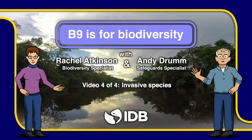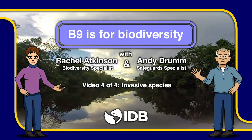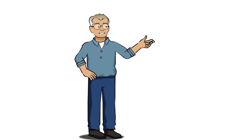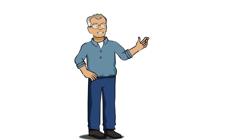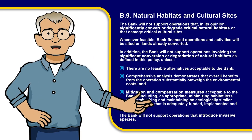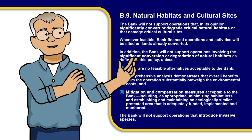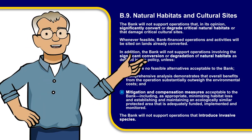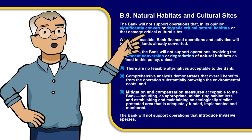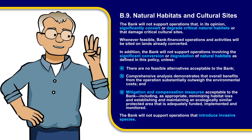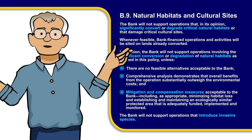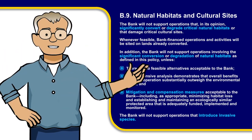B9 is for biodiversity with Rachel and Handy. Let's start by presenting the B9 policy. The first read of it can be confusing but there are a few words that are really important for understanding the policy, and these are the words we will focus on in these short videos. In this third video we're going to look at how the policy deals with invasive species.